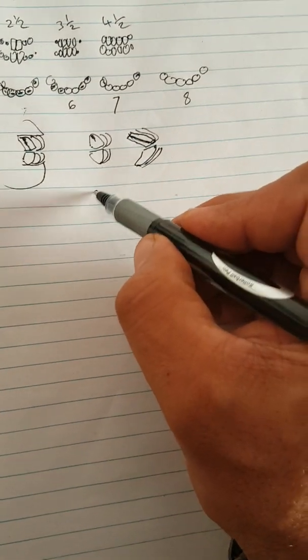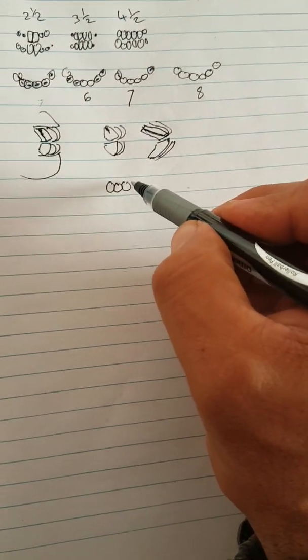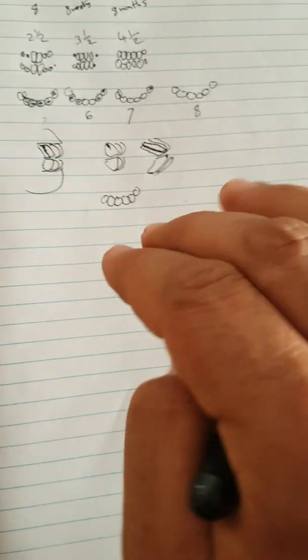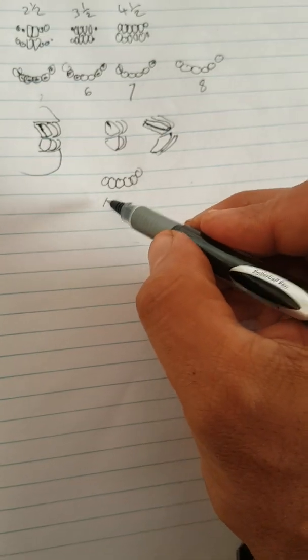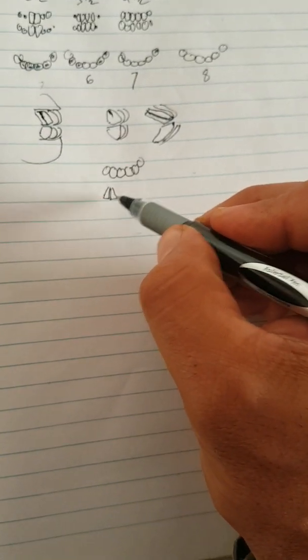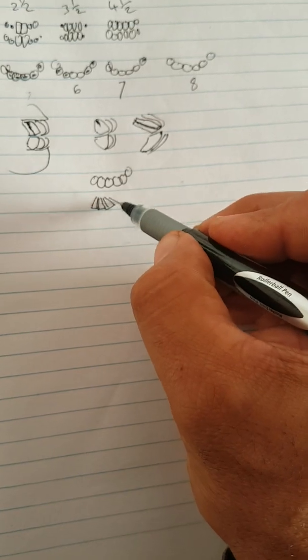Also, a younger horse's teeth are kind of round when looking down on them, because when they're older they're more triangular and kind of squeezed together.